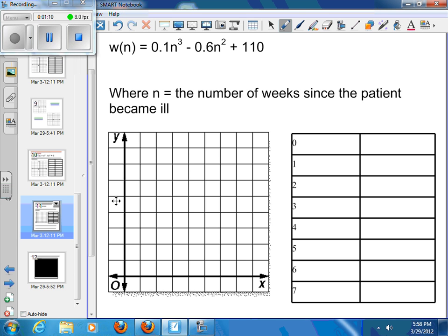So if I plug in a zero up there, I should end up with 0.1 times zero cubed minus 0.6 times zero squared plus 110. And we're going to start off with zero being the number in here, which would just give us a 110 on that first one.